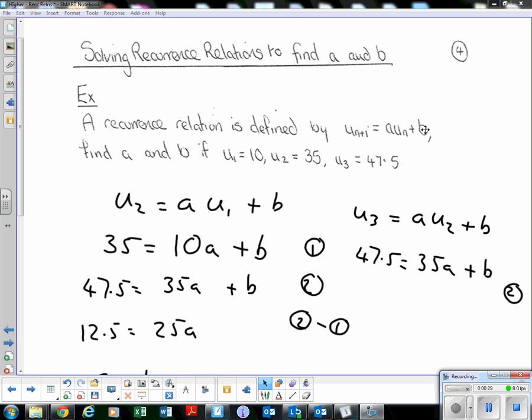So rather than being given the recurrence relation, we need to find it given u_1, u_2, and u_3. What can we do here? Well, I know that u_2 will be a times u_1 plus b. So substituting in those values, 35 = 10a + b.